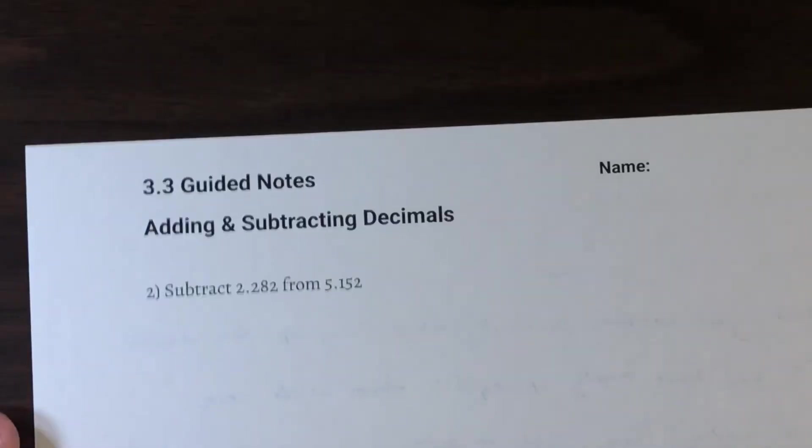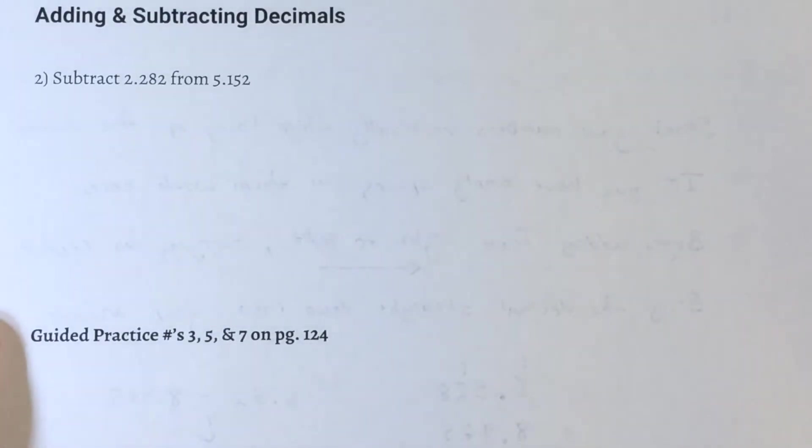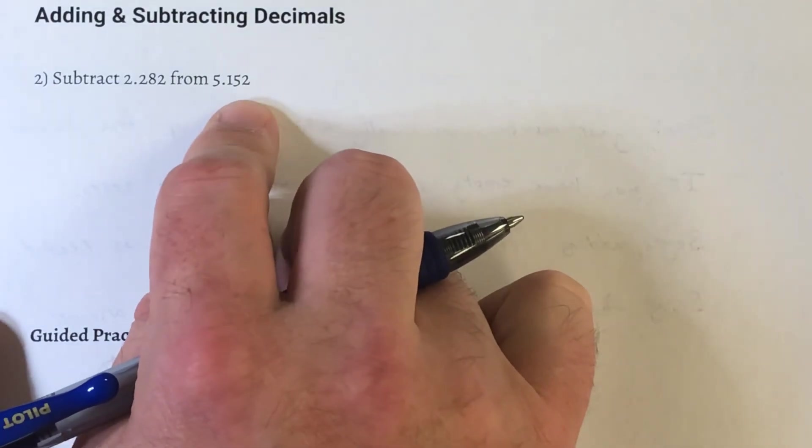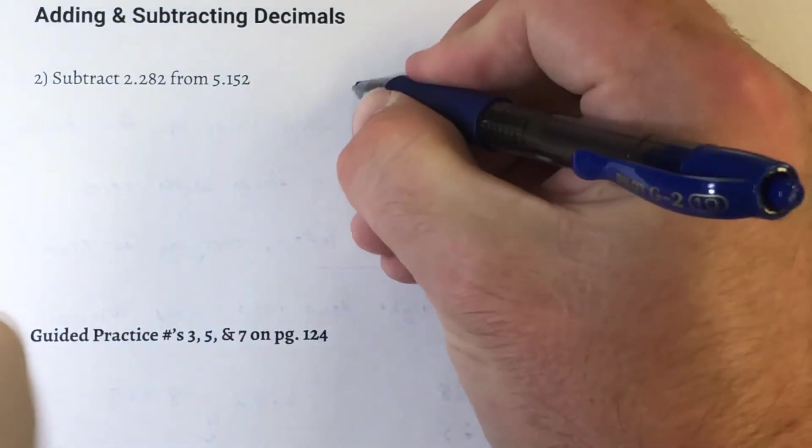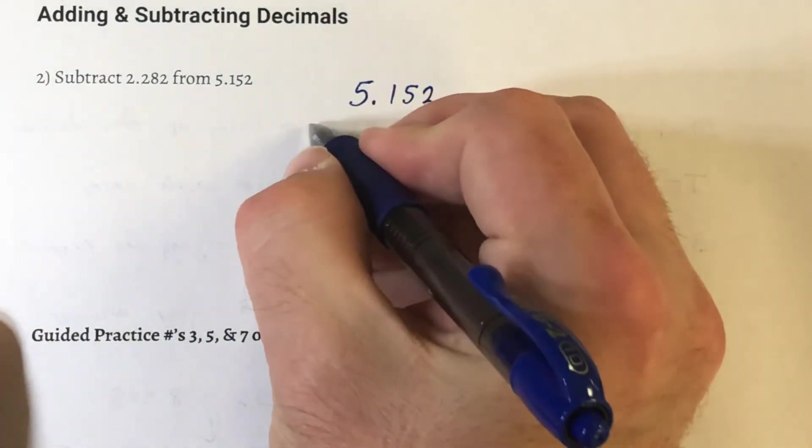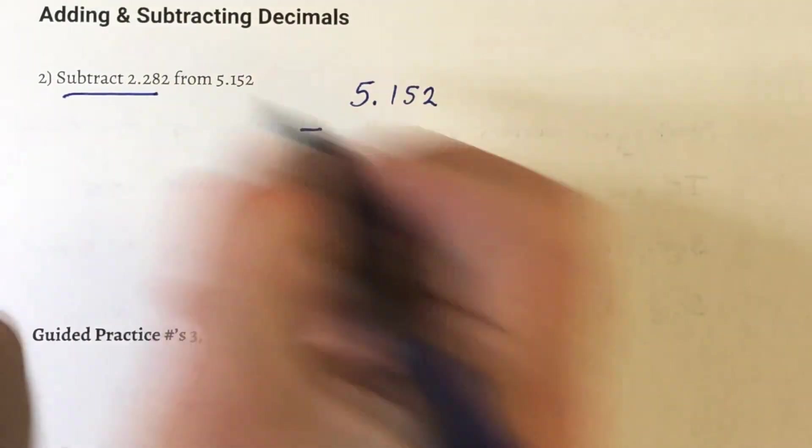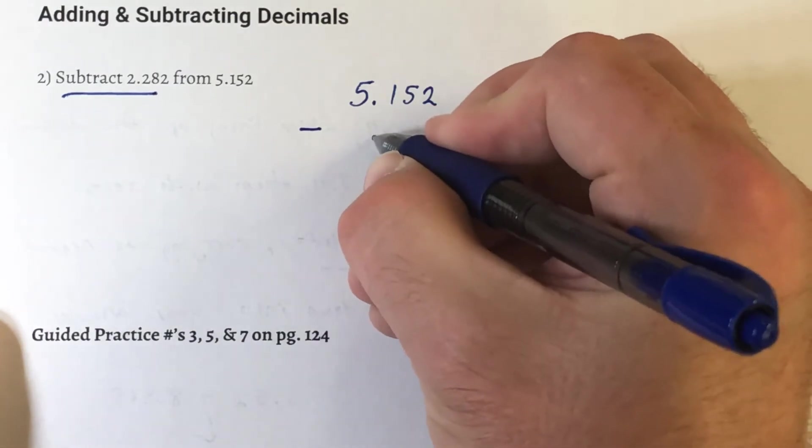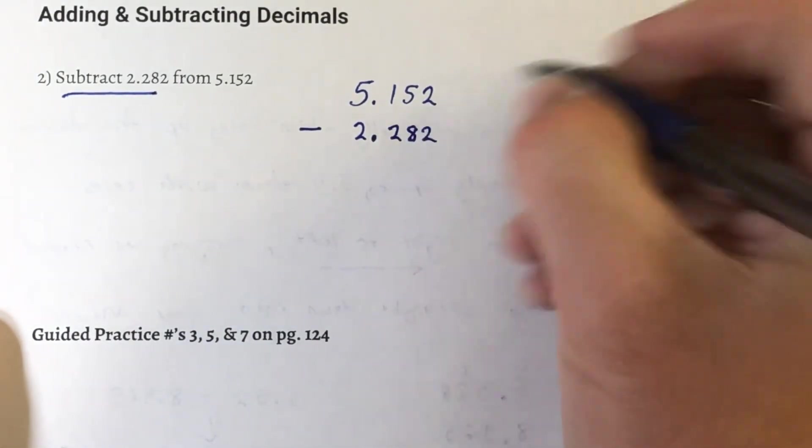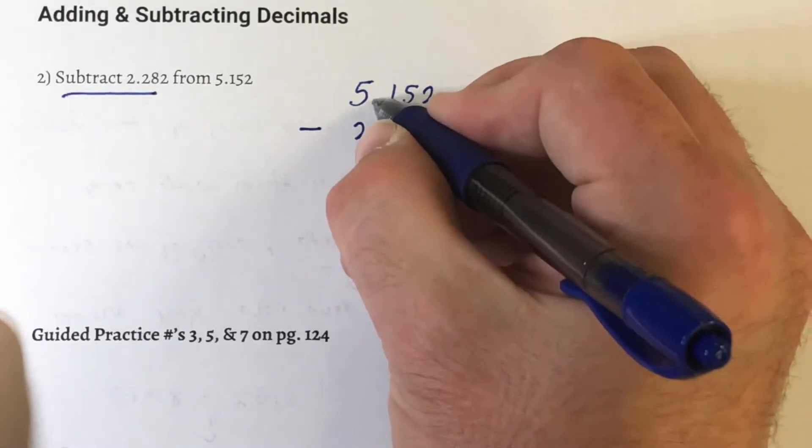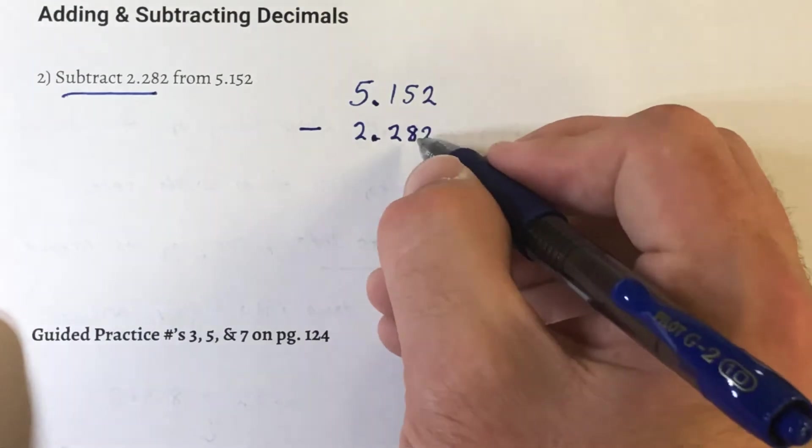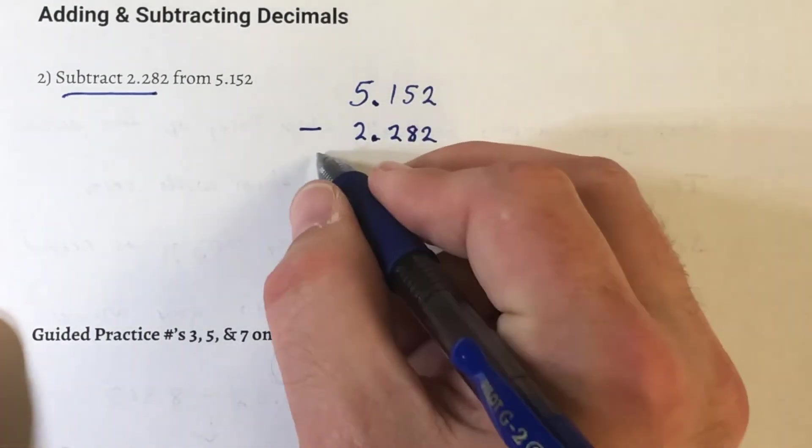So let's do a quick example problem. We're going to subtract 2.282 from 5.152. So let's write 5.152 first. We're going to subtract 2.282. So again, I focused, I put that decimal first. So that meant the 2 had to go under the 5, 2 under the 1, 8 under the 5, and the last 2 under that last 2.